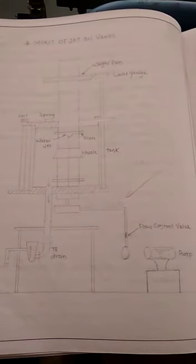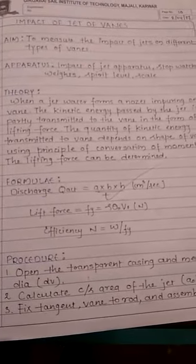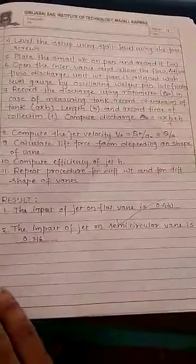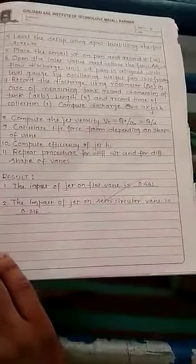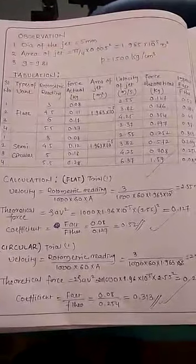Let me show you the tabular column. Here, this is the impact of jet on vanes figure. This is the aim and apparatus required. Even the procedure is there, so you can write down this procedure. You can pause it and write it down. Here comes your calculation and tabulation.